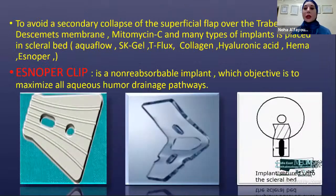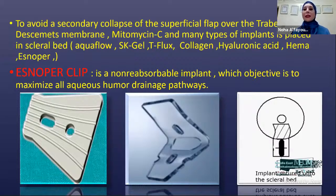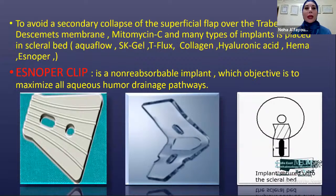To avoid secondary collapse of the superficial flap over the trabeculo-Descemet membrane, mitomycin, 5-FU, and many types of implants can be placed in the scleral bed, like SK gel, collagen, hyaluronic acid, HEMA, and Staar. I want to speak about my experience with the Snoper Eclipse, a non-reabsorbable implant with the objective to maximize the aqueous hemorrhage pathway.